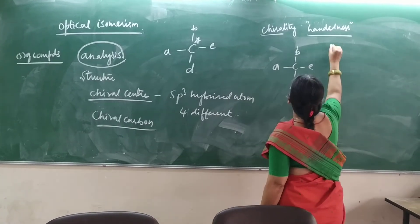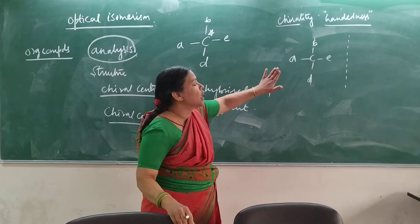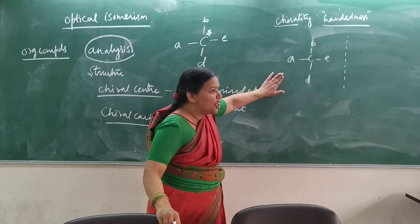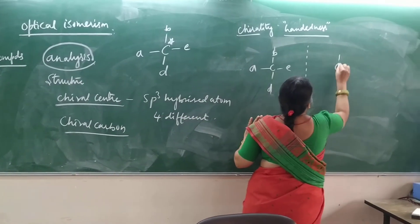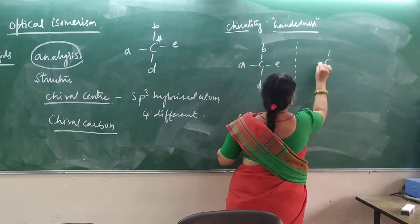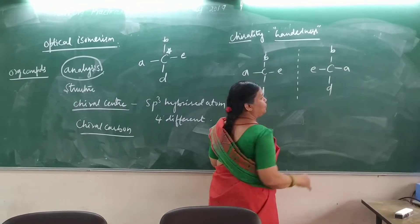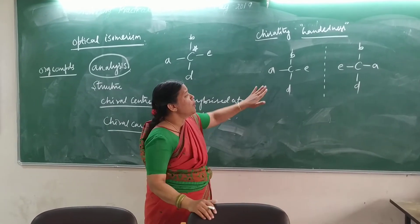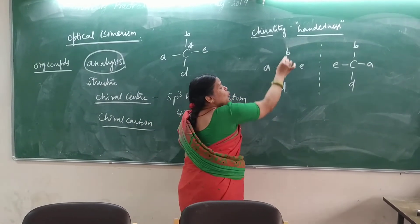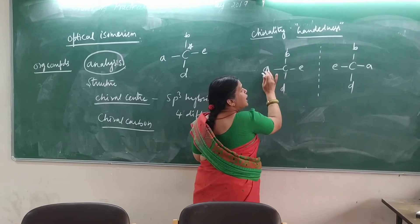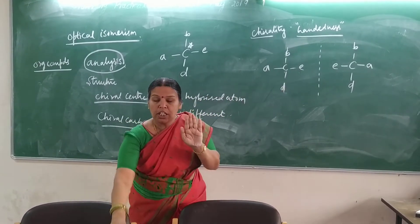If you look at the molecule, you see the structure remains. The carbon center is called the mirror image — the material remains the same here, only the image is the same.